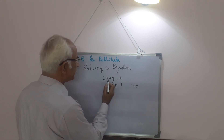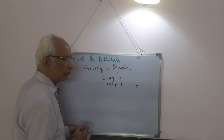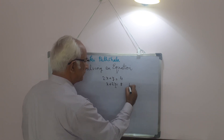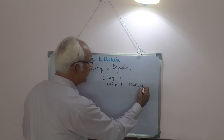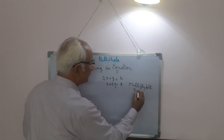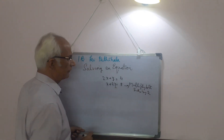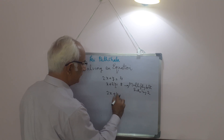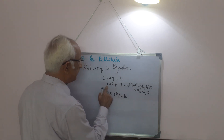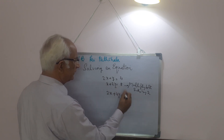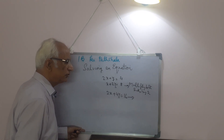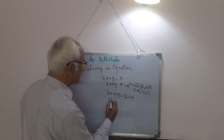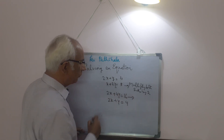In the second method, the coefficient of x in equation 1 is 2x and in equation 2 it is x. We will multiply equation 2 on both sides by 2. This gives us 2x plus 4y is equal to 16. We multiplied each term by 2. This is now equation 3, and equation 1 remains as it is.